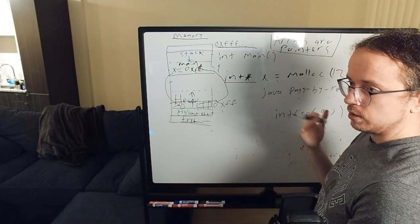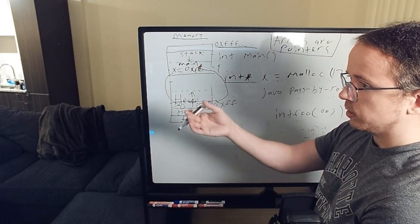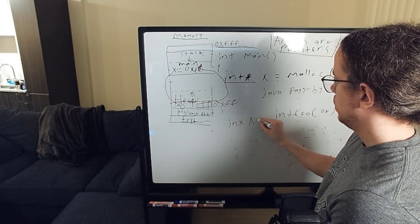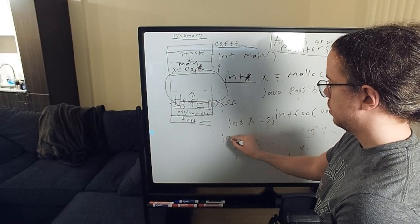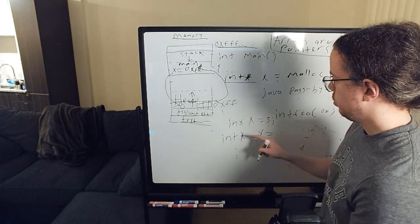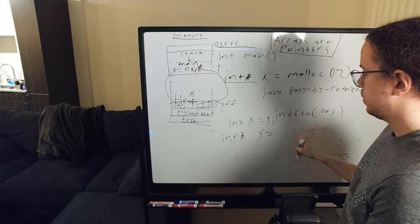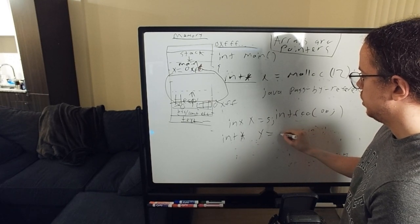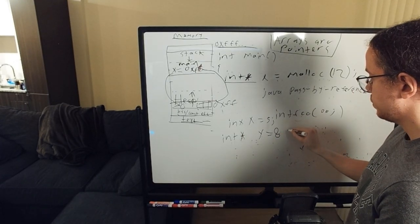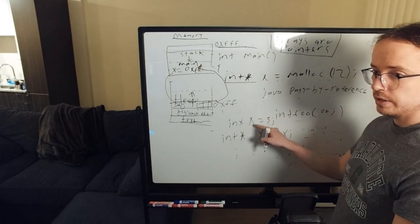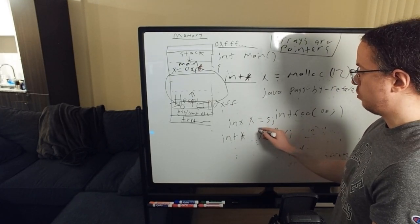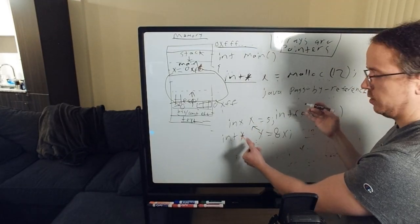Maybe you have int x equals five. And maybe you have int pointer, int star y. If you want y to point at x, then you would say, you would use what we call the address of operator, which is the ampersand. So you would say y equals the address of x. And now y points to five or y points to x. It points to the memory address of x.